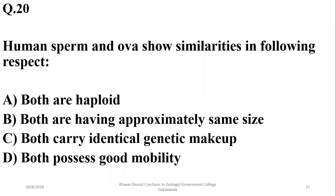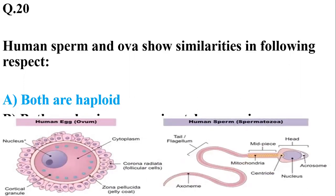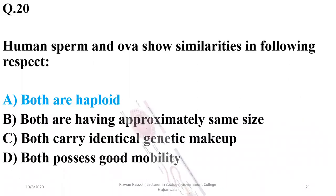Number twenty: human sperm and ovum show similarities in the following respect. Both are haploid — yes, they are. They do not have approximately the same size; they carry different genetic makeup due to mitochondrial DNA contribution from the ovum; and only sperms carry good motility. So the right option is alpha — both of them are haploid; the other properties in the list are differences.